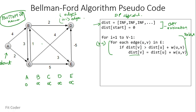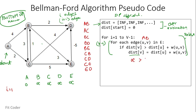Let's lay down all the edges — we have nine edges. Starting with I equal to 1. For edge AB: distance of B is infinity, which is greater than distance of A (0) plus edge weight AB (4), so distance of B becomes 4. For edge AC: distance of C is infinity, which is greater than distance of A (0) plus weight of AC (2), so distance of C becomes 2.